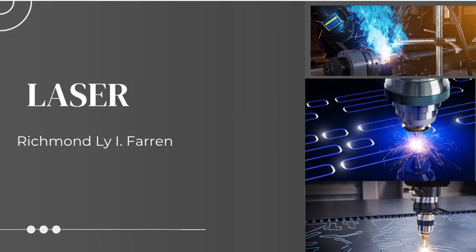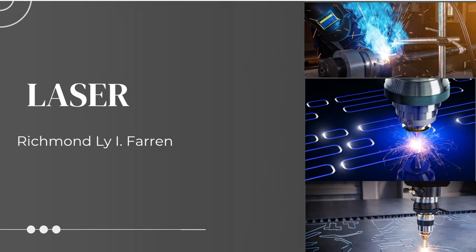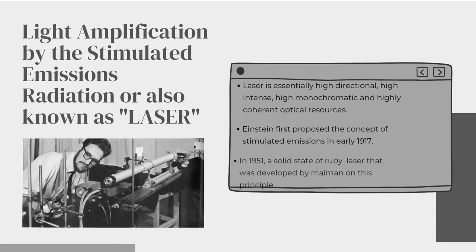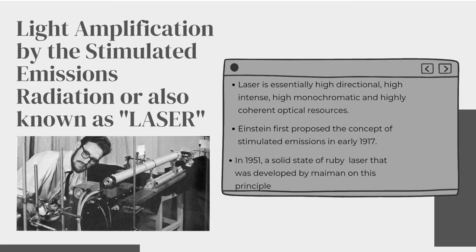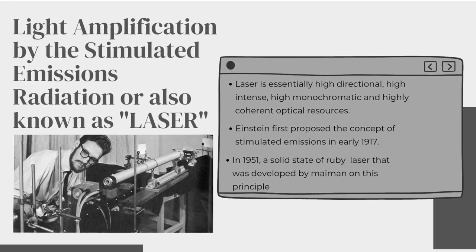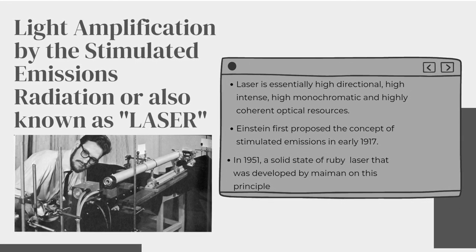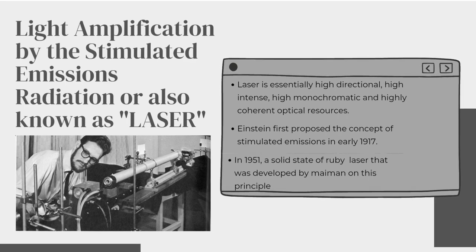Laser, by Richmond Lee Farron. Light Amplification by the Stimulated Emission of Radiation — also known as laser. Laser is essentially highly directional, high intensity, highly monochromatic, and highly coherent optical radiation. Einstein first proposed the concept of stimulated emission in early 1917. In 1951, a solid-state ruby laser was developed by Maiman on this principle.